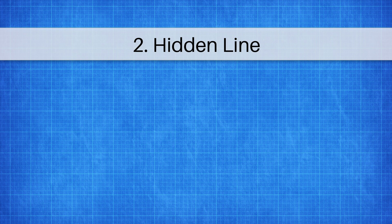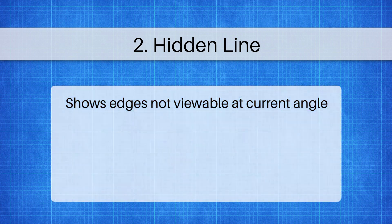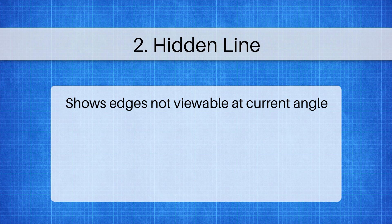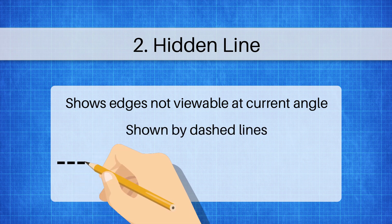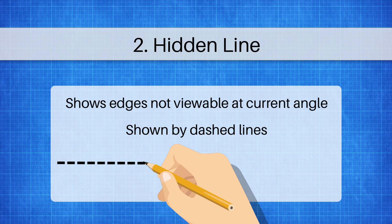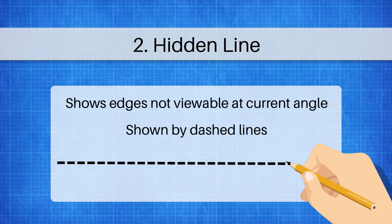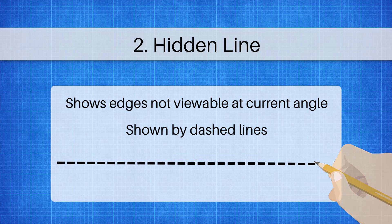The second type of line is a hidden line. Hidden lines show hidden features that you can't see on an object at its current viewing angle but if you were to turn the object you'd be able to see the features or things going on behind it. Hidden lines are dotted lines. They're a little bit thinner than visible lines but they're dotted to show that there's something happening behind the piece but not to take away the importance of the visible lines.